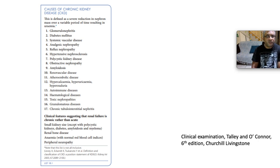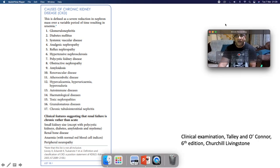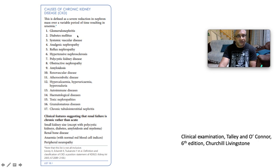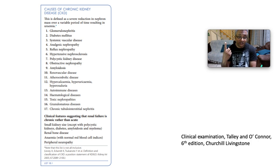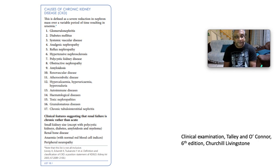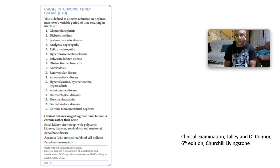The most common causes of chronic kidney disease worldwide are diabetes and hypertension. In the developing world, glomerulonephritis is also an emerging cause. A clinical feature suggesting renal failure is chronic rather than acute is small kidney size on ultrasound — except in polycystic kidney disease, diabetes, amyloidosis, and myeloma. CKD also manifests with renal osteodystrophy, adynamic bone disease, brown's tumour, normocytic normochromic anaemia from diminished erythropoietin production, and peripheral neuropathy.